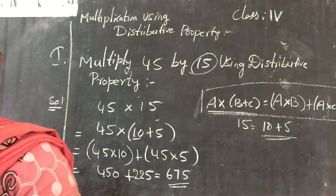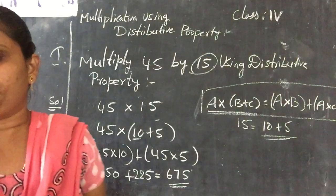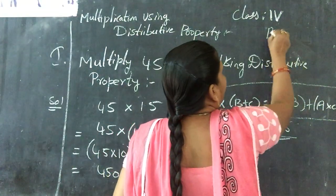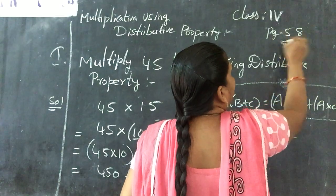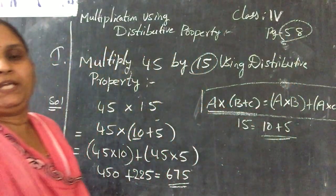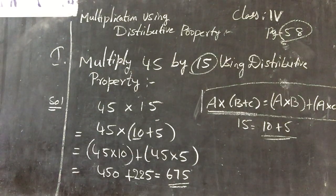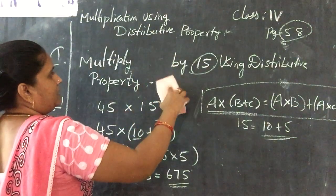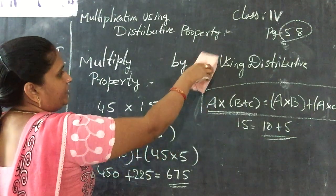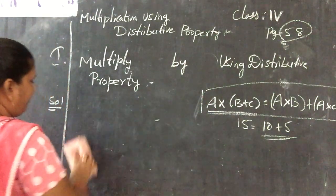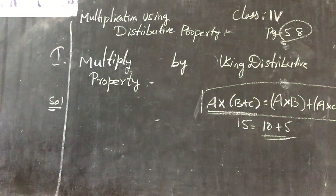Based on that, page number 58. Open page number 58. In page number 58 we are having the first Roman 1, 25. Roman number 1. Multiply. One more sum you can do.